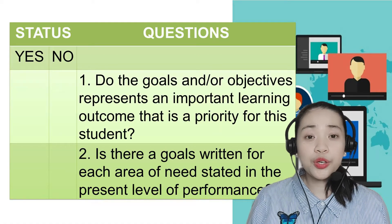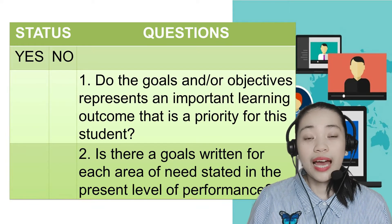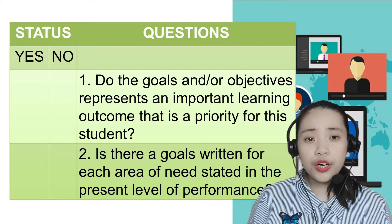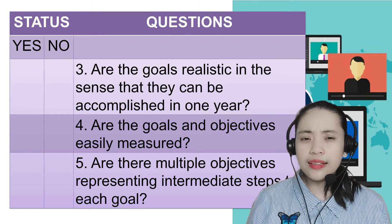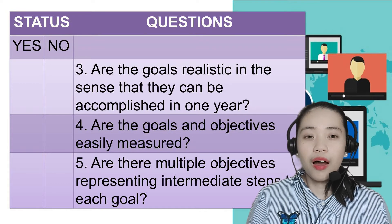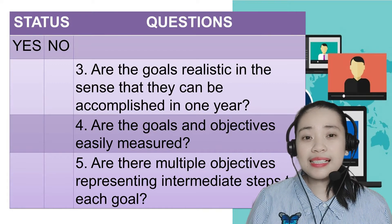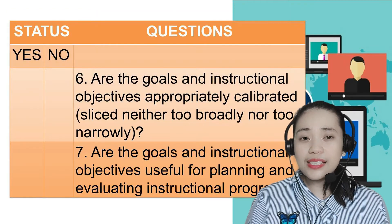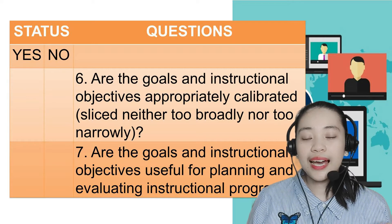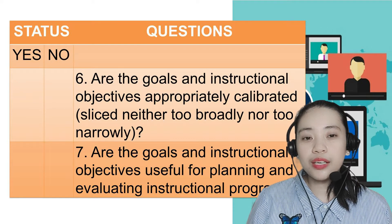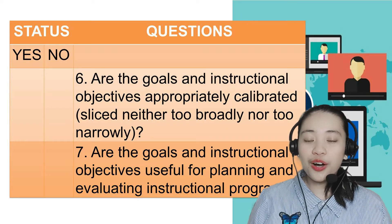Here's an example checklist for goals and objectives. One, do the goals or objectives represent an important learning outcome that is a priority for this student? Two, is there a goal written for each area of need stated in the present level of performance? Three, are the goals realistic in the sense that they can be accomplished in one year? Four, are the goals and objectives easily measured? Five, are there multiple objectives representing intermediate steps to each goal? Six, are the goals and instructional objectives appropriately calibrated, neither too broadly nor too narrowly? And seven, are the goals and instructional objectives useful for planning and evaluating instructional programs?